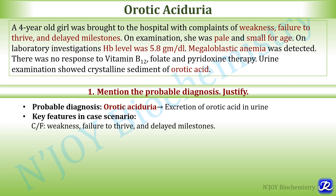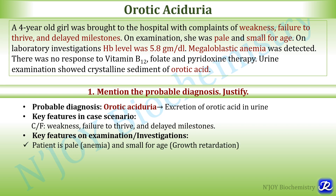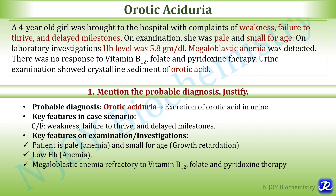The key features in the case scenario which favor the diagnosis of orotic aciduria are: the patient presented with weakness, failure to thrive, and delayed milestones. On examination, the patient is pale — meaning anemia is present — and small for age, indicating growth retardation, which is also a clinical feature of orotic aciduria. Hemoglobin is low on investigation; megaloblastic anemia was detected and is refractory to vitamin B12, folate, and pyridoxine therapy. On urine analysis, orotic acid crystals are seen. All these features favor the diagnosis of orotic aciduria, which is the disorder of pyrimidine metabolism.